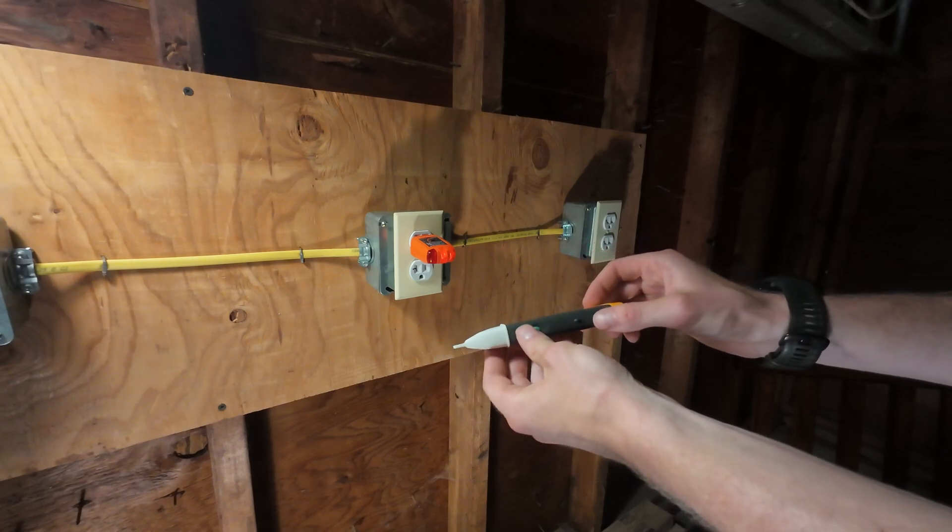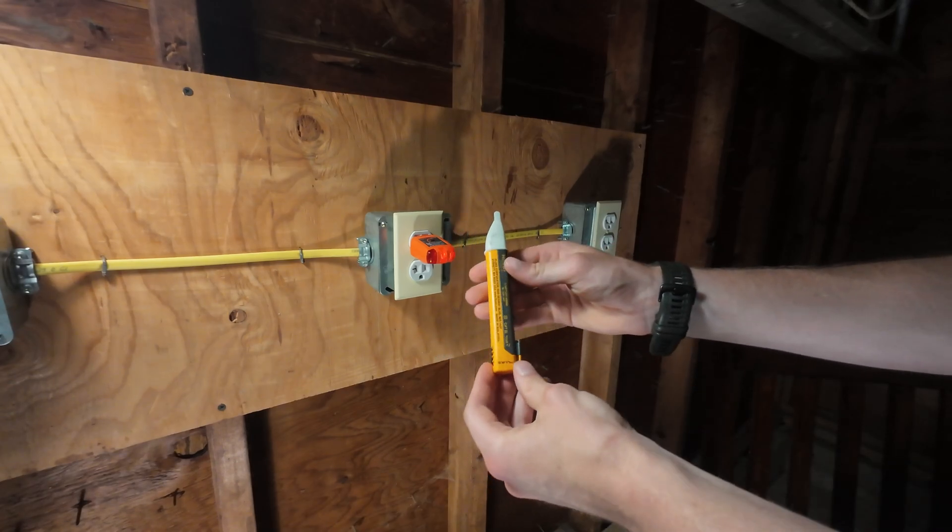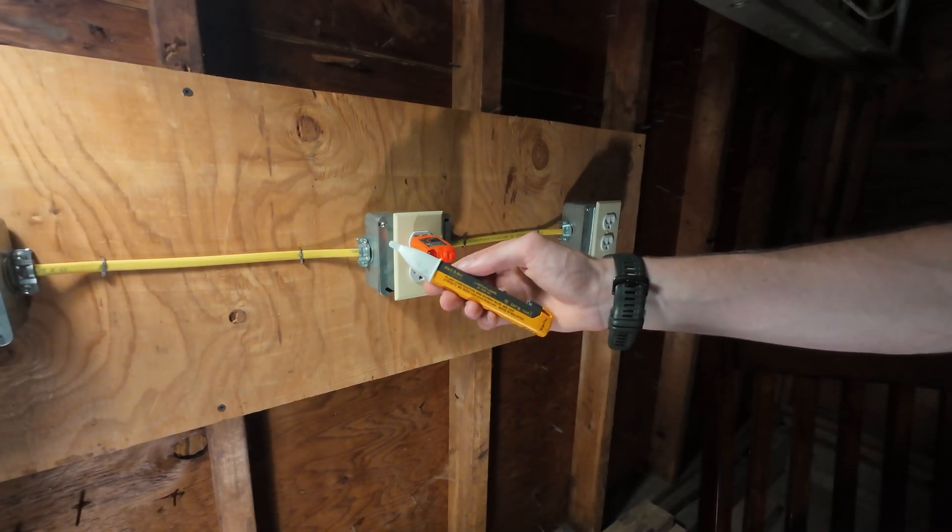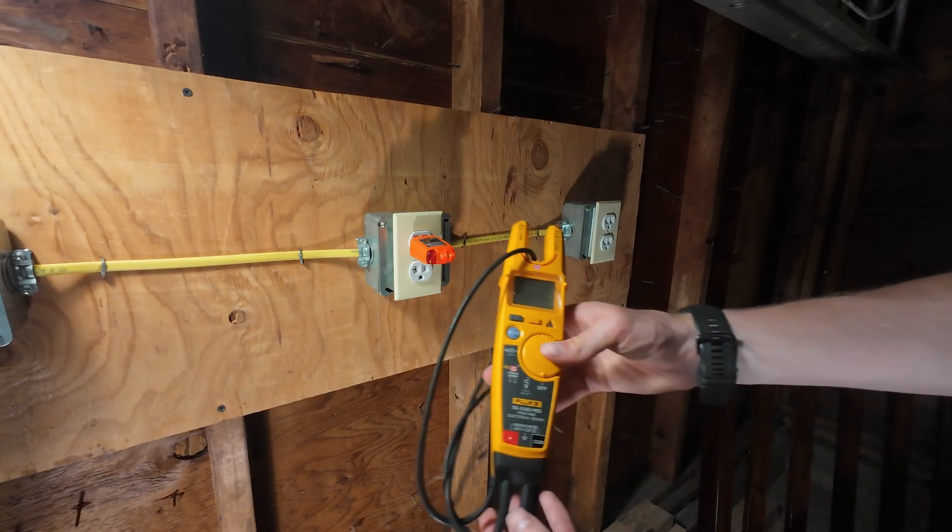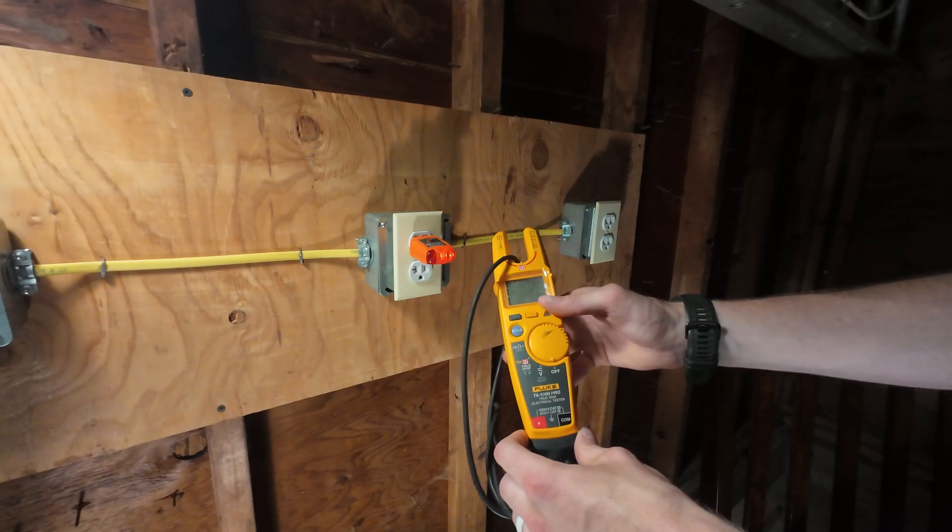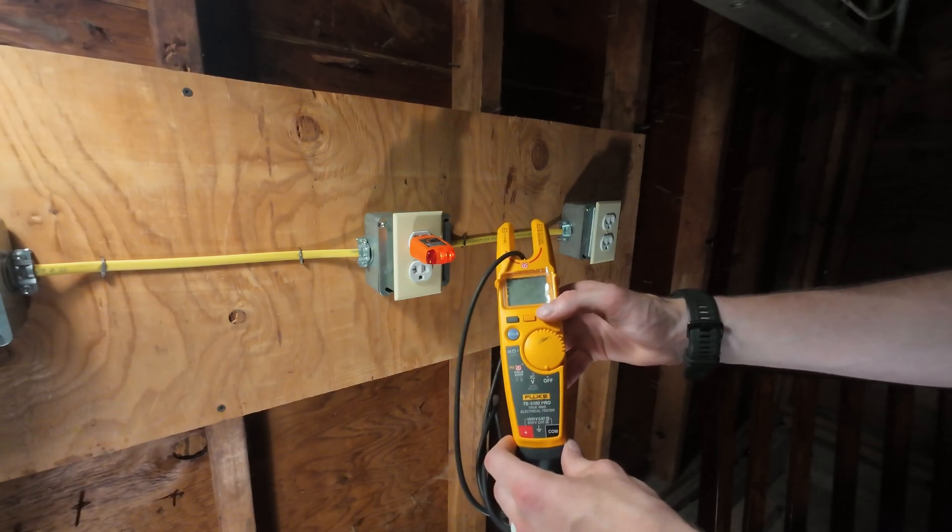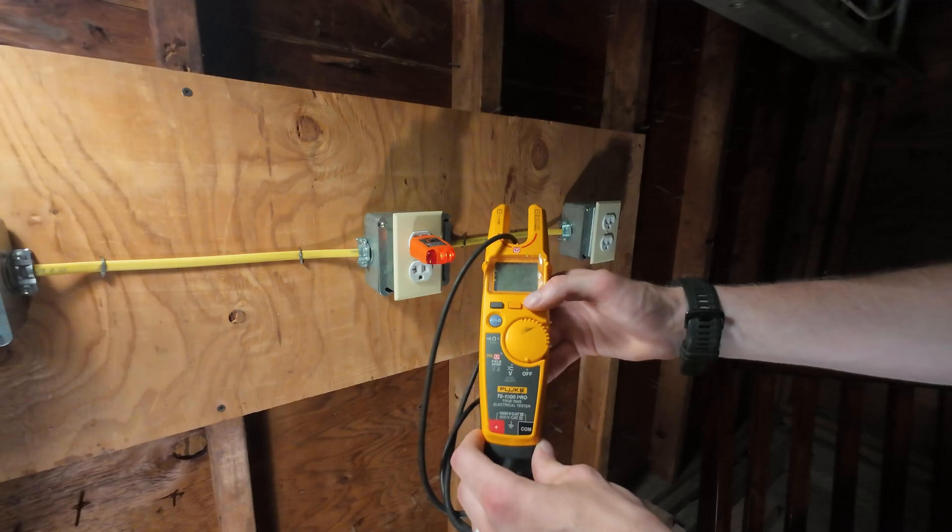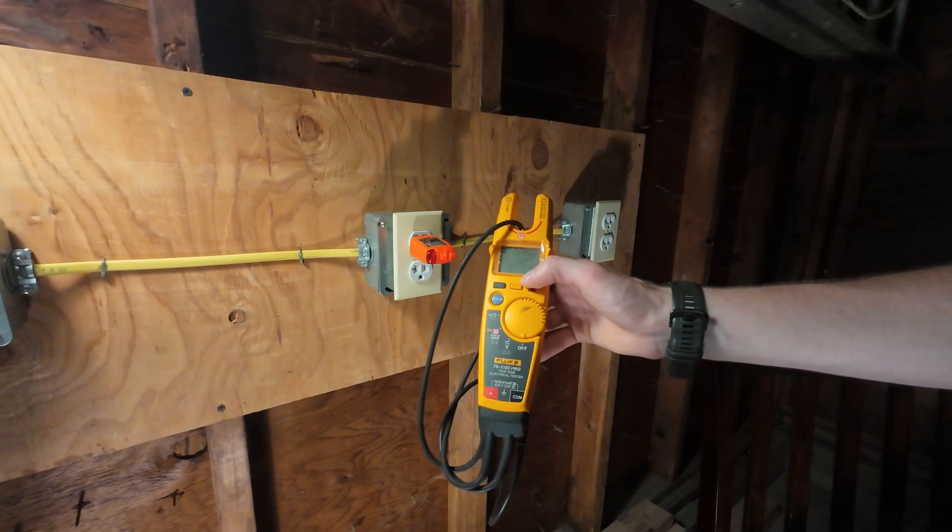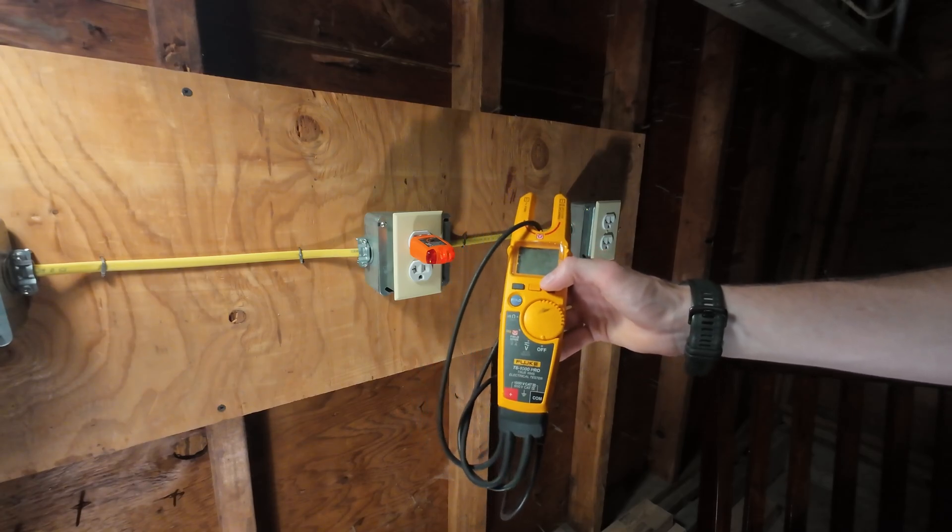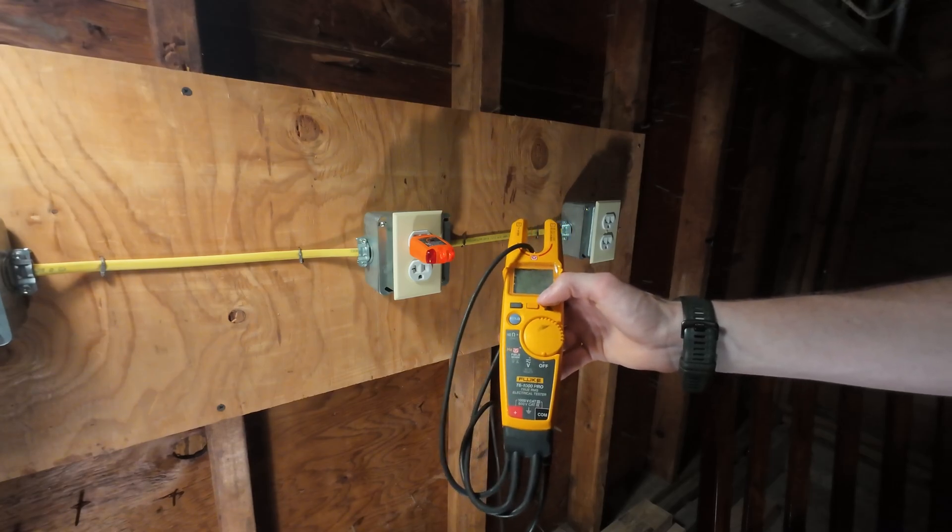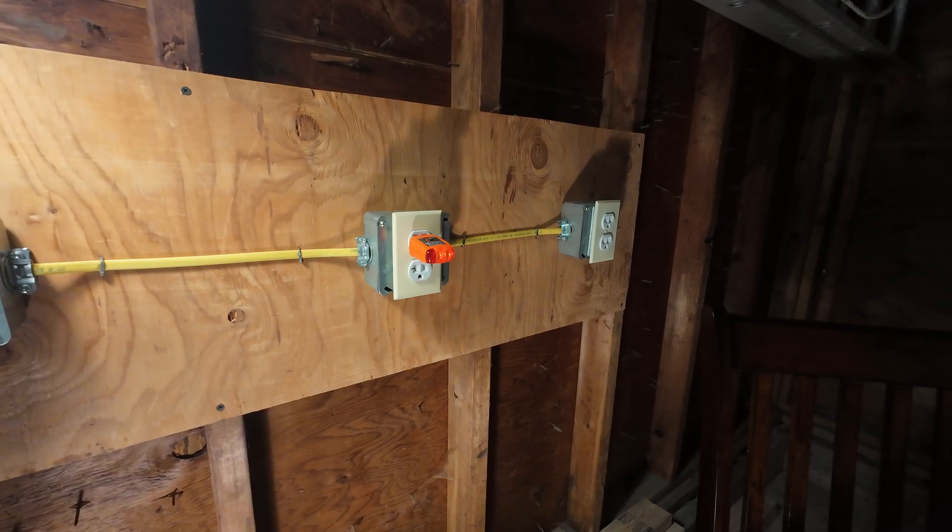Another tool you're going to want for any project you do to work safely is a non-contact voltage tester. This specific one is from Fluke, but I also have used Klein Tools in the past. A third safety tool you're going to want is some sort of metering device. This is a Fluke T6-1000 Pro tester. You don't need to get something quite this fancy; any multimeter will work. Klein provides a really good model that's much more affordable. Fluke has some higher-end ones that I also have, and I'll provide links in the video description for any of the tools I use in this video.